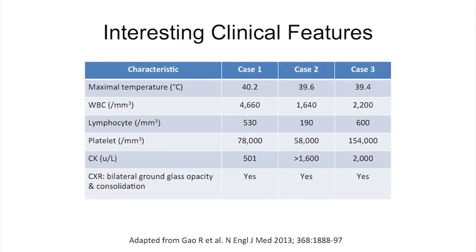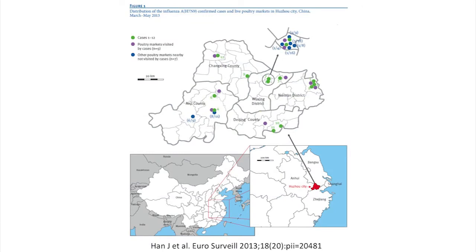The interesting clinical features of these first three cases: all had high fever around 40°C, leukopenia with white blood cell counts below 5,000, and lymphopenia. Two had low platelet counts under 100,000, all had elevated CKs, and chest X-rays showed bilateral ground glass opacity and consolidation. Investigation of the first 12 cases mapped to eastern China, with green dots marking cases and purple dots marking poultry markets — showing close geographic proximity between the two.